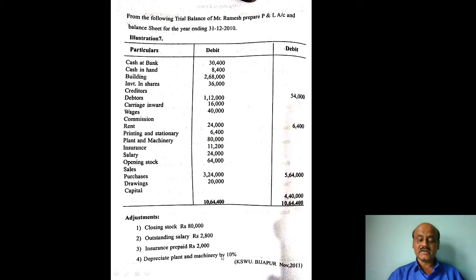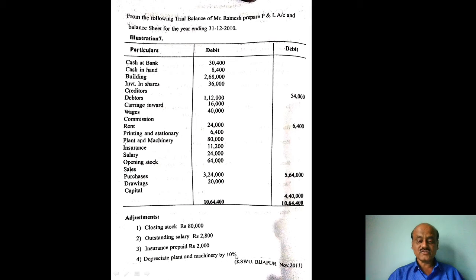Depreciation: 10% on plant and machinery. Calculation goes to profit and loss account debit side. Depreciation on balance sheet — plant and machinery less depreciation shown as asset.